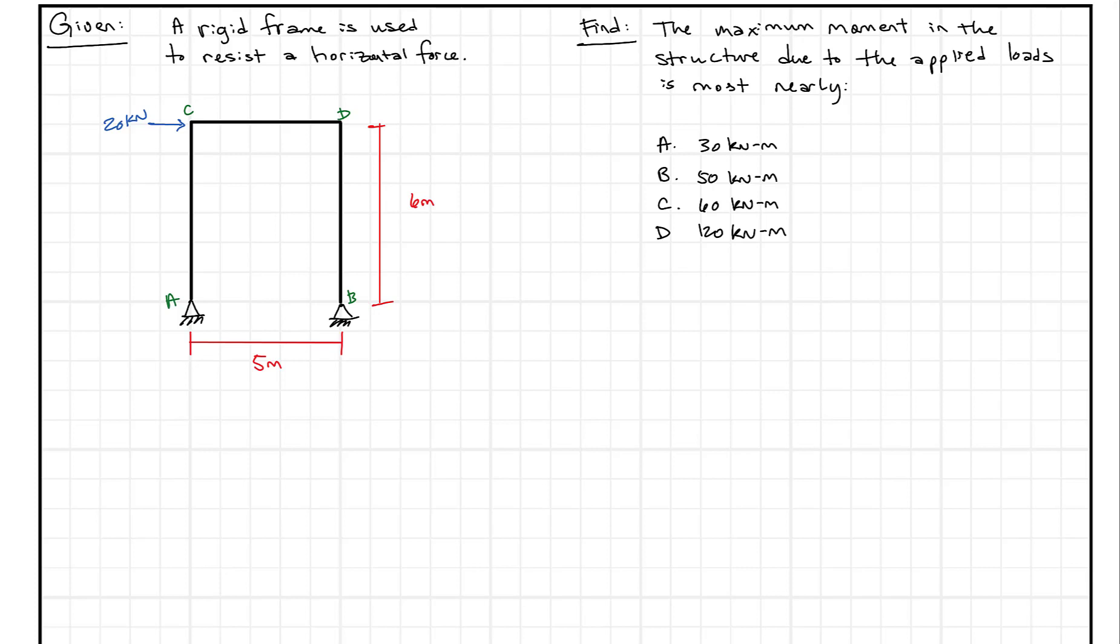In the process of designing structures, you're going to come across lateral forces due to earthquakes and wind. A lot of times they get lumped at the top of a frame because of a diaphragm or the way that the load gets distributed to the frame. In this question, this is an FE style question where you're asked to find the maximum moment in this structure due to the applied loads. Any time we get a problem like this, a static structures problem, I like to draw off my free body diagrams.